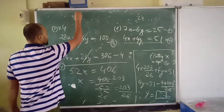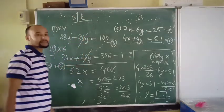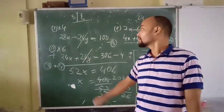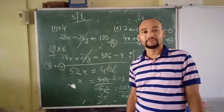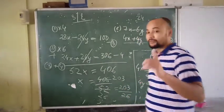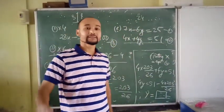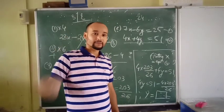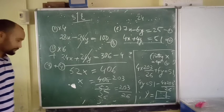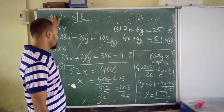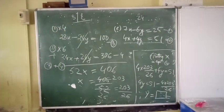In today's video we have completed the substitution method and the elimination method. There are two more methods remaining — comparison and cross multiplication — both are easy. In the next video I will complete both processes. Your homework: try to apply the elimination method to the substitution method examples and check whether you are able to form the equations. If you have any doubt, let me know in the interactive class and in our group.